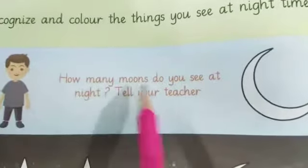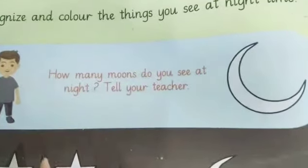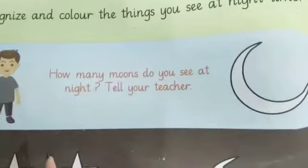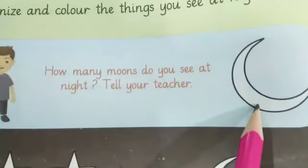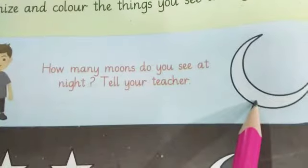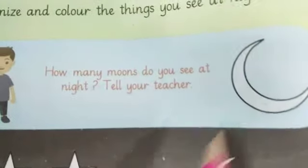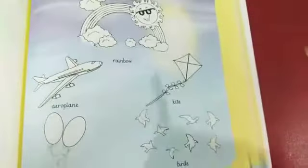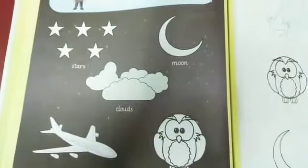How many moons do we see at nighttime? One moon — we see one moon at nighttime.